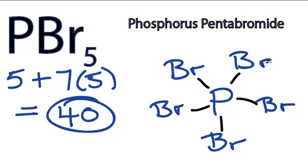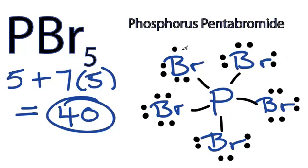So let's put them on the outer atoms to form octets for the bromine. So we have 10, 12, 14, and 40.